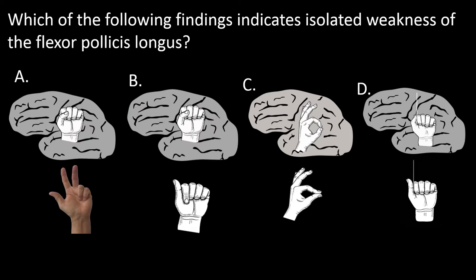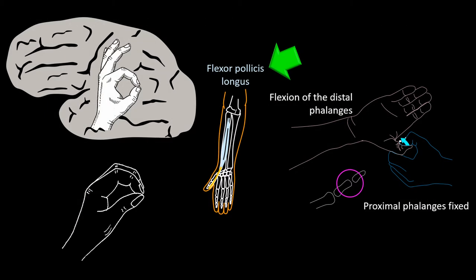Next question: which of the following findings indicates isolated weakness of the flexor pollicis longus? Please take a few seconds to look at this figure — in the brain you see the intended movement, and below you see the result achieved. This frame indicates weakness of the flexor pollicis longus. The figure in the brain indicates the desired movement — making the O sign in Europe or the OK sign in the United States. Notice that the index finger distal interphalangeal joint is flexed as it should be, but the thumb interphalangeal joint is not — demonstrating weakness of the flexor pollicis longus and normal flexor digitorum profundus strength.